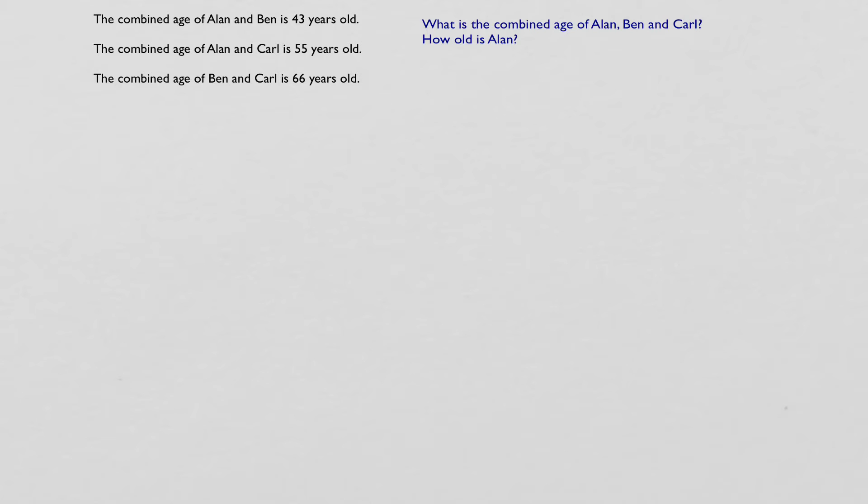First thing you have to do here is make an equation from each sentence. We're going to use the first letter for their name. So Alan and Ben, a plus b equals 43. Then a plus c equals 55. And b plus c, Ben and Carl equals 66.